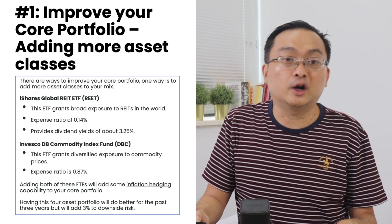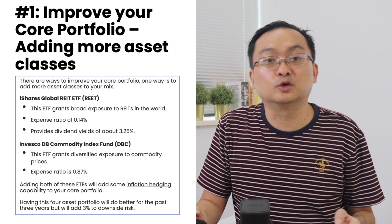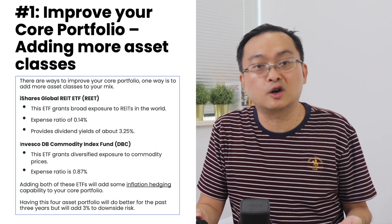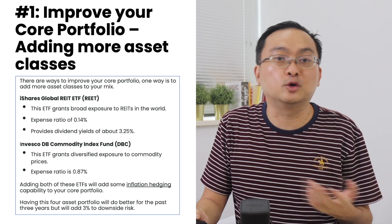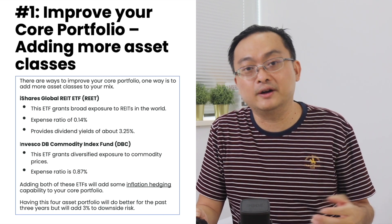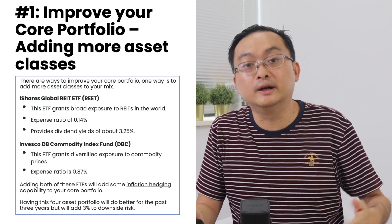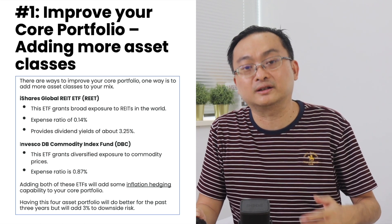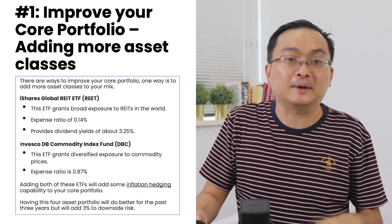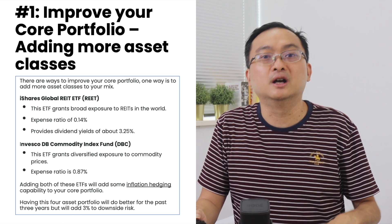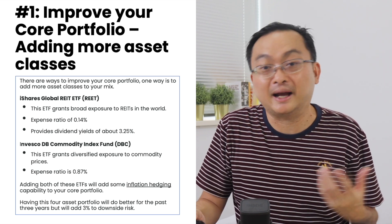It also fights against inflation very well. On top of REITs, you might also want to add a Commodity Index Fund, which allows you to add commodities into your core portfolio as well. The Invesco DB Commodity Index Fund is a very broadly diversified fund that gives you exposure to not just oil or gold, but also to things like pork bellies and wheat.